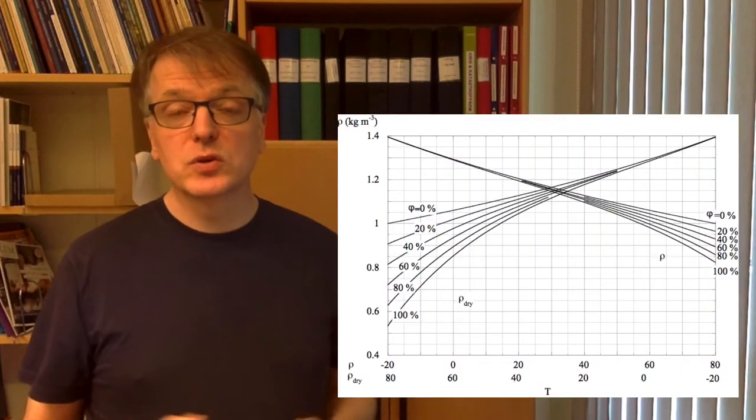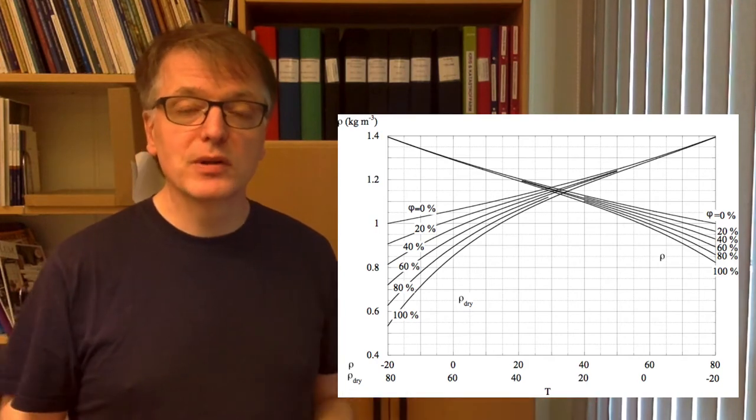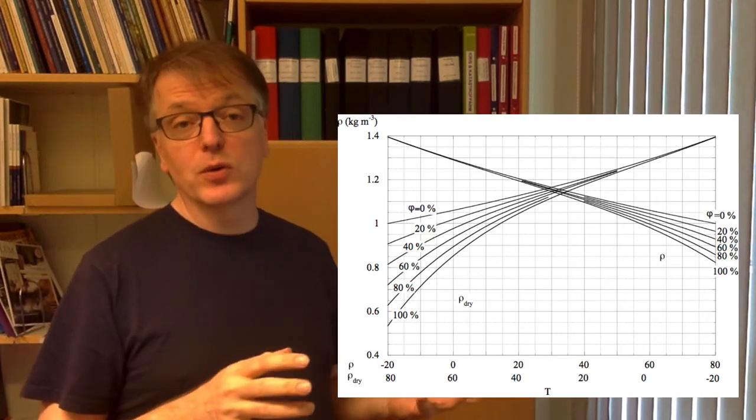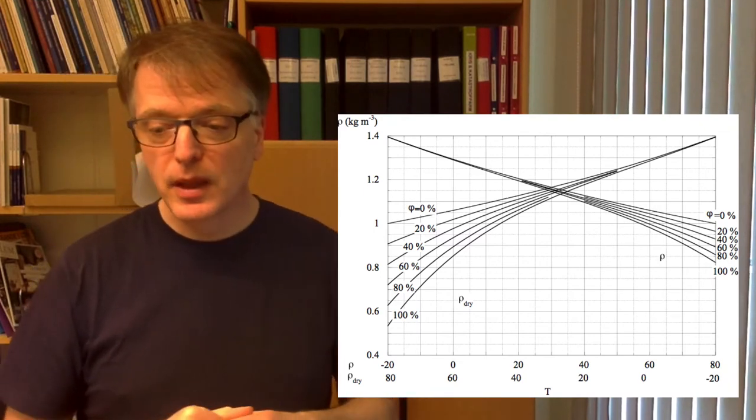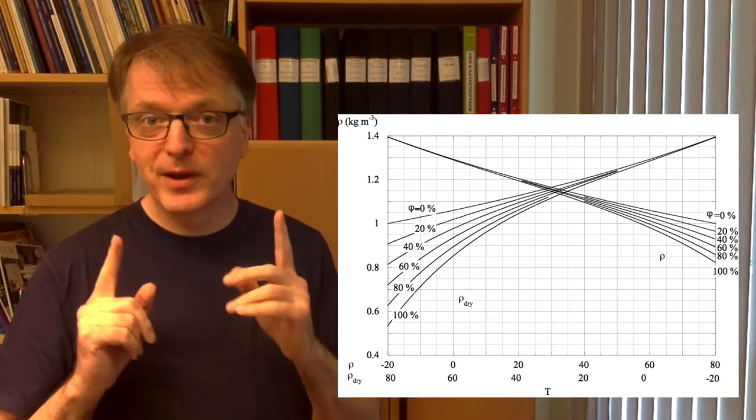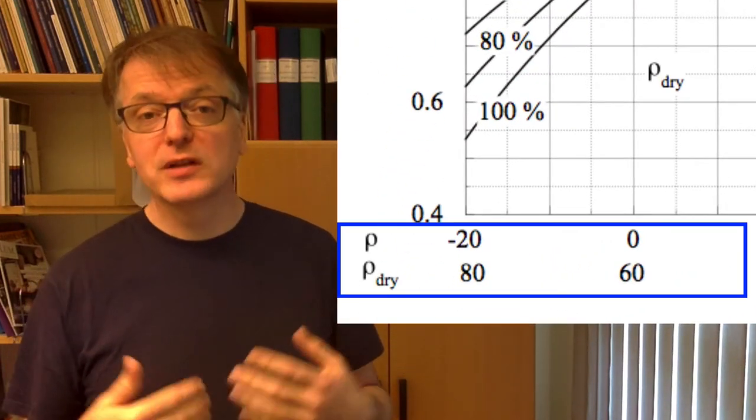So if we draw the density of the air, it's typically not drawn in the Mollier diagram because it becomes so messy with all the lines. So it's often drawn in a separate diagram, and it might look like this.